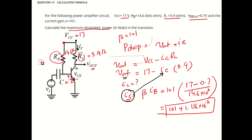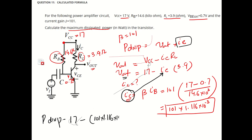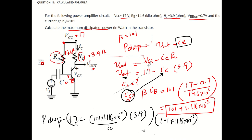Using the same value of IC, the power dissipation will be Vout times IC. Vout is 17 minus IC times RL, where IC is 1.116 times 10 to the minus 3 and RL is 3.9. Simplifying, the answer comes out to be 1.87 watt. So this is the maximum dissipated power.